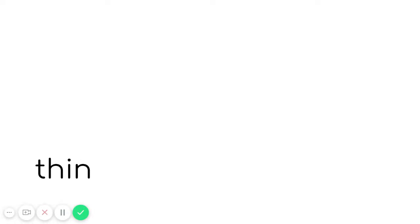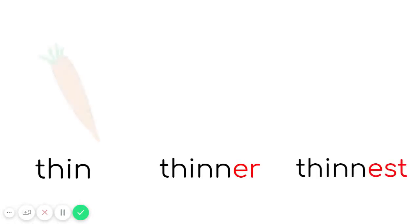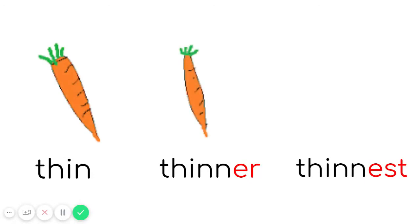Let's have more examples. This is thin, thinner, thinnest. That carrot is thin. That is thinner. And that is the thinnest.